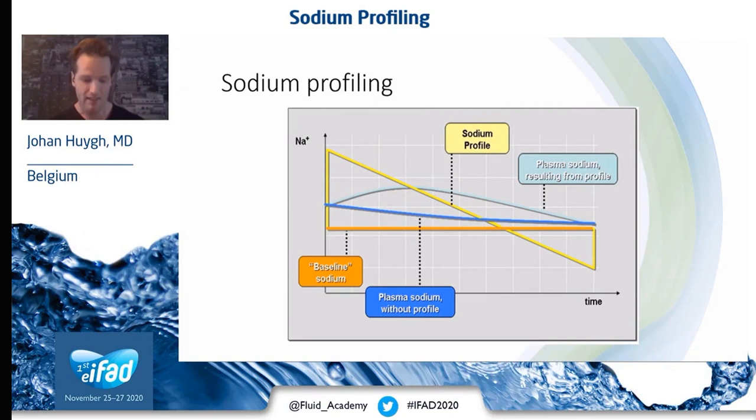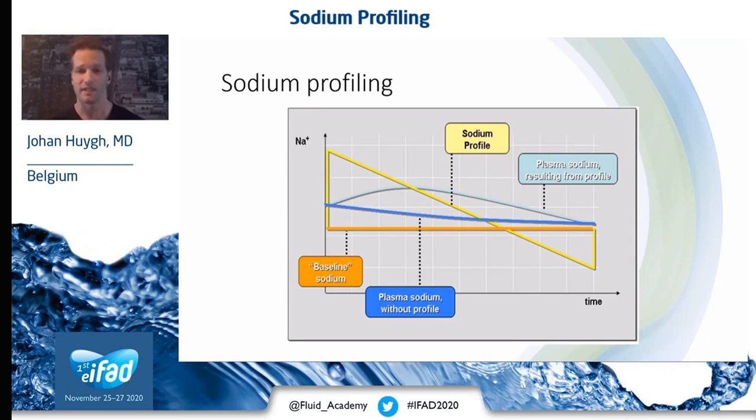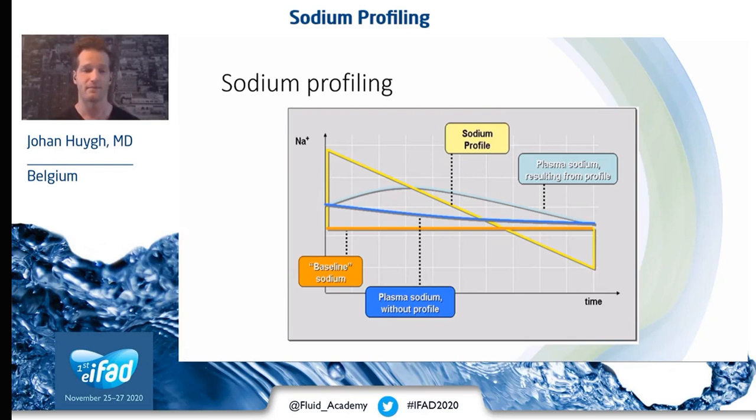Hence, sodium profiling. In sodium profiling, the sodium content of dialysis fluid is varied throughout the session. We start with a high sodium in dialysate, thereby increasing the sodium in our patient's plasma, aiding in plasma refilling and preventing hypotension and muscle cramps. During the session, we decrease the sodium in dialysate so as to achieve a neutral sodium balance at the end of dialysis. Sodium profiling was developed to achieve the benefits of higher plasma sodium levels at the start of dialysis without a positive sodium balance at the end.